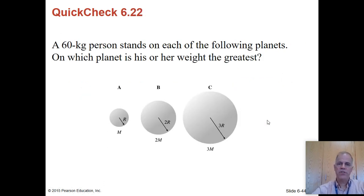A 60-kilogram person stands on a variety of planets. We want to know where their weight is greatest. And here's the answer. The reason is because the mass and the radius are increasing at the same rate. But inverse square law comes into play for the increase in radius, but not for the increase in mass. So, for example, in this one, twice the mass, that's going to be twice the gravity, but twice the radius is one-quarter the gravity.